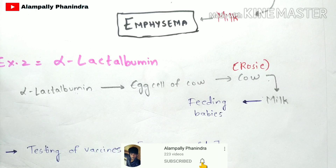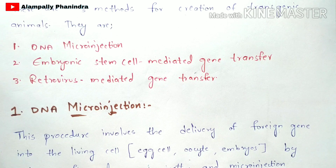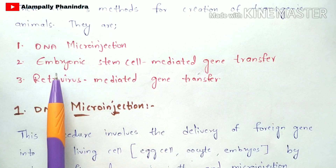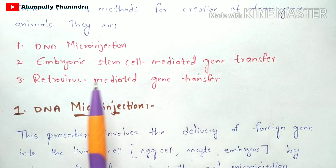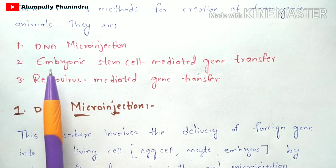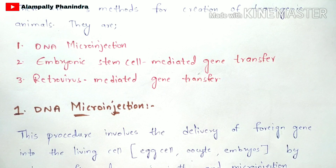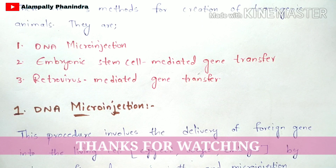To perform animal transgenesis, there are three methods: DNA microinjection, embryonic stem cell-mediated gene transfer, and retrovirus-mediated gene transfer. These three processes will be explained in upcoming videos. If you liked this explanation, please like and subscribe. If you have any doubts regarding this video, comment in the comment box and we will clarify your doubts immediately. Thank you.